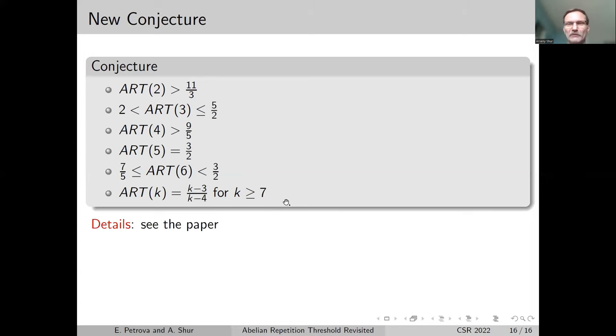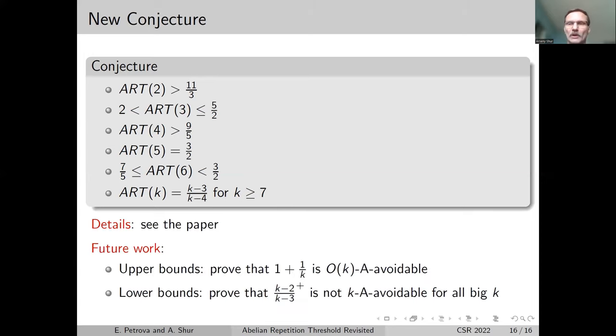Finally, we should say that the details can be found in the paper, and there's a lot of future work. Two main ideas for future work: prove an upper bound that, say, linear number of letters over k is enough to avoid 1 + 1/k - this will be a reasonable upper bound. For the lower bound, we suppose that it may be possible to prove analytically that this exponent is not k-avoidable for all. Thank you.